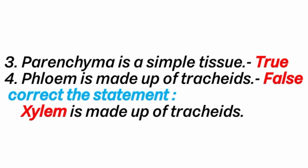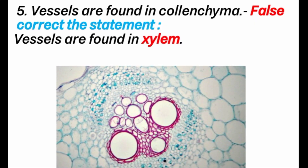Fourth question: Phloem is made up of trachea. Answer is false. Correct statement: Xylem is made up of trachea. Fifth question: Vessels are found in Collenchyma. Answer is false. Correct statement: Vessels are found in xylem.